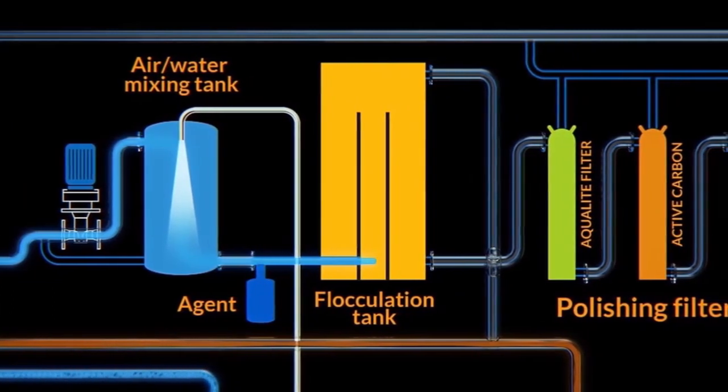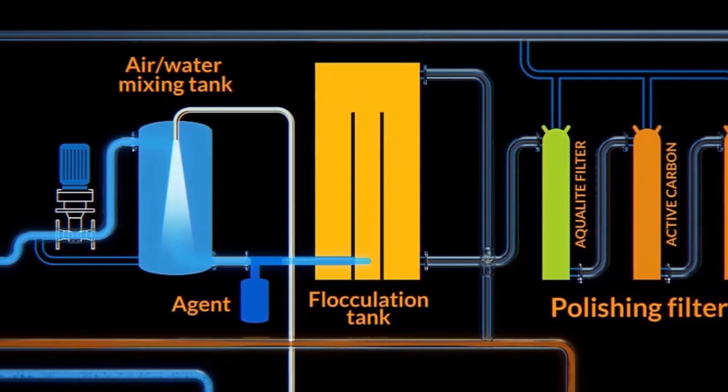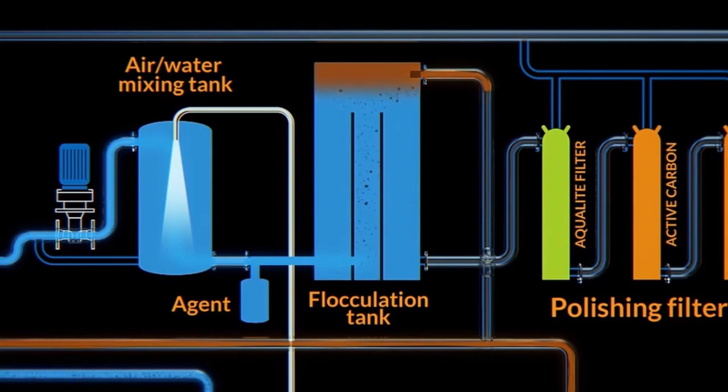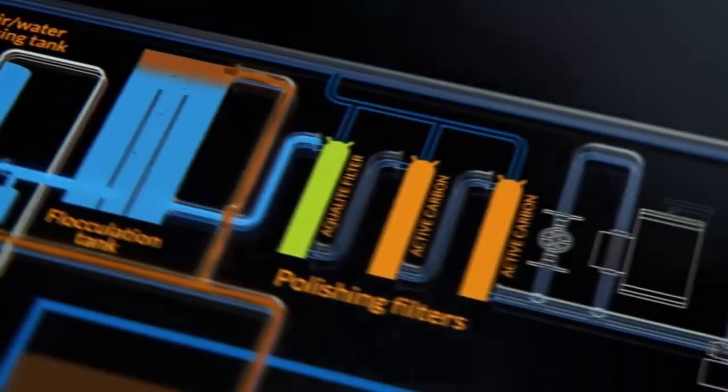Step 4 is processing of the flocks. The flocks float through a pipe in the centre to the top of the tank where they are skimmed off. Step 5 is filtration through three inline filters.